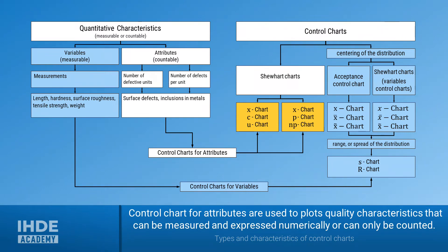Second, there are the attributive characteristics — those are all characteristics one can only count. On the right side, we have the different control charts for attributive characteristics, shown with a white and yellow background. These are also called Shewhart charts, named after American Walter Andrew Shewhart. As you can see, there are six control charts for attributive characteristics, used to plot quality characteristics that can only be counted.